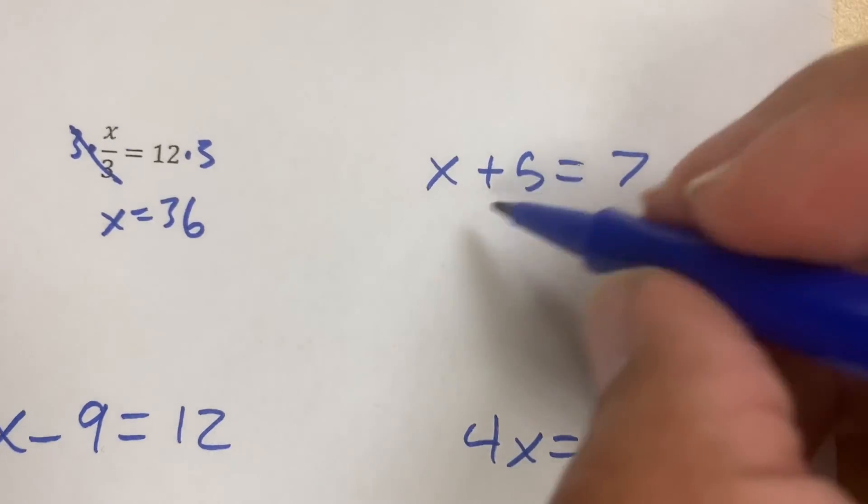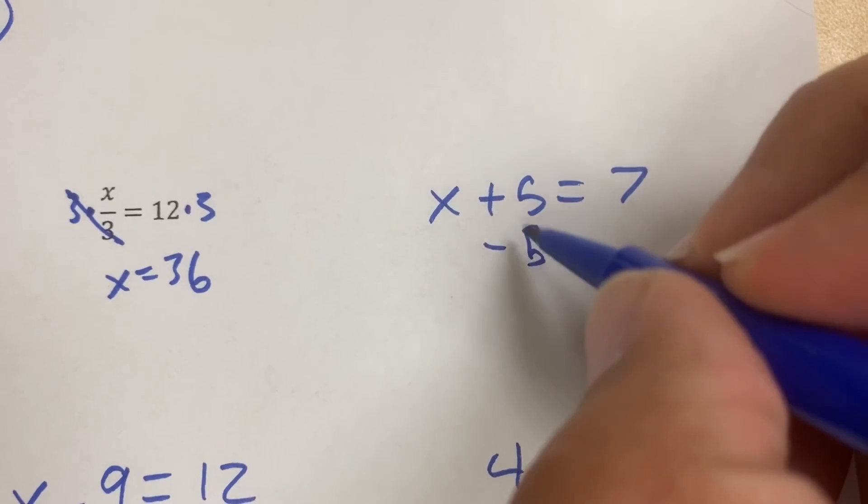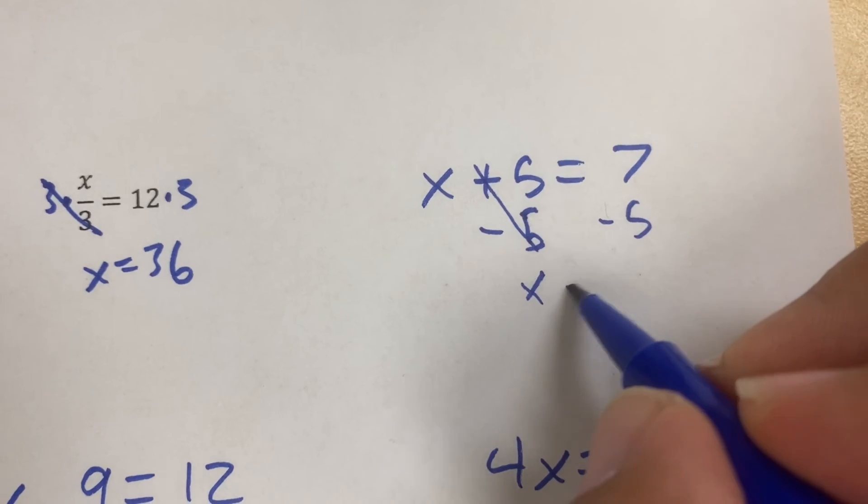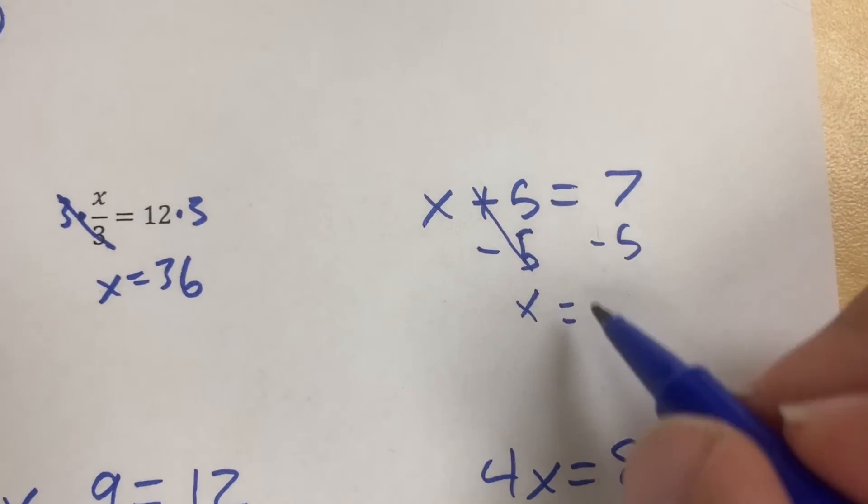What's the opposite of plus 5? Minus 5. That goes away. Minus 5. We're left with x equals 2.